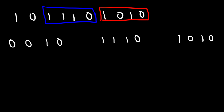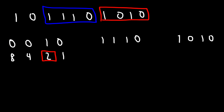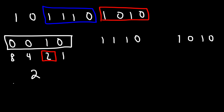So let's start with the first group. We have the place values 8, 4, 2, and 1. We only have a value of 2 here — for the zeros, just ignore them. So 0010 corresponds to a value of 2.